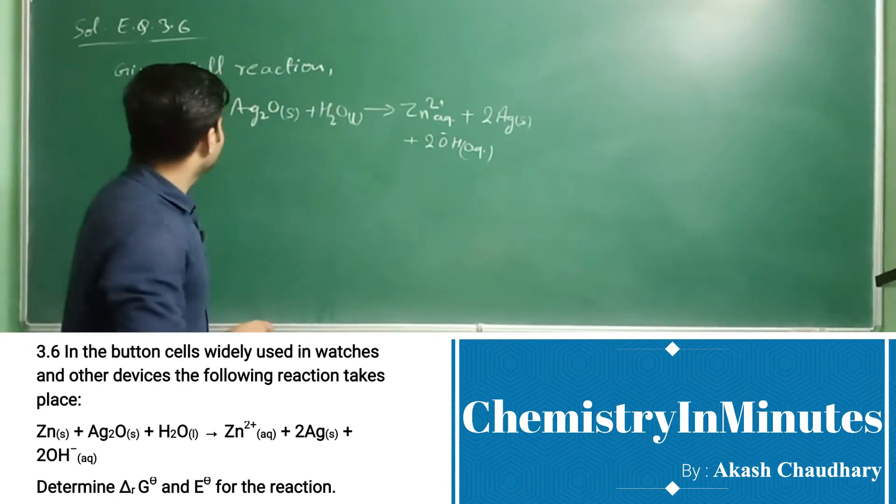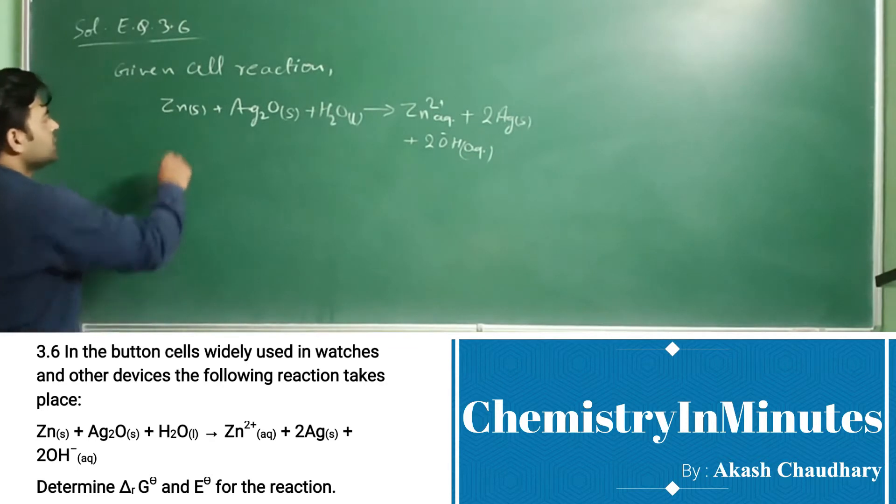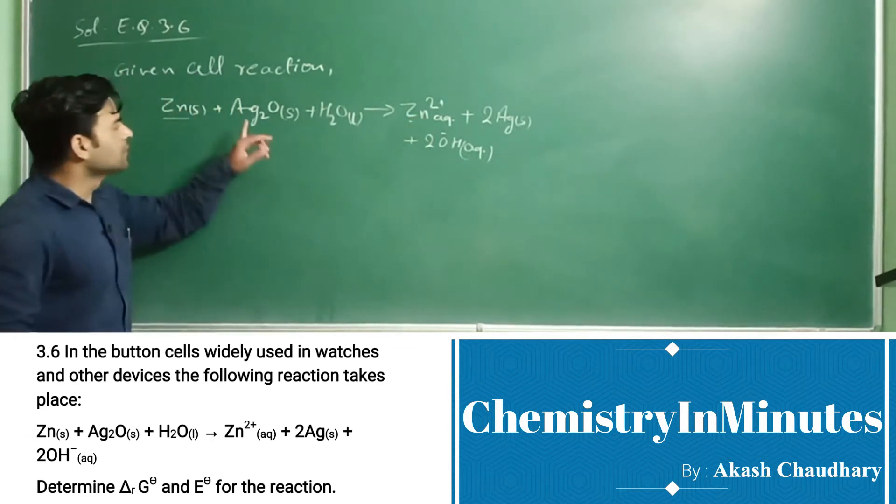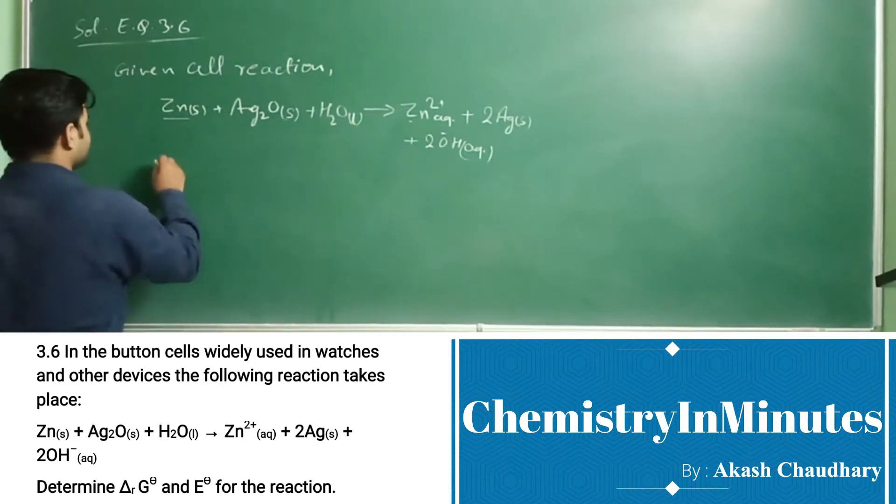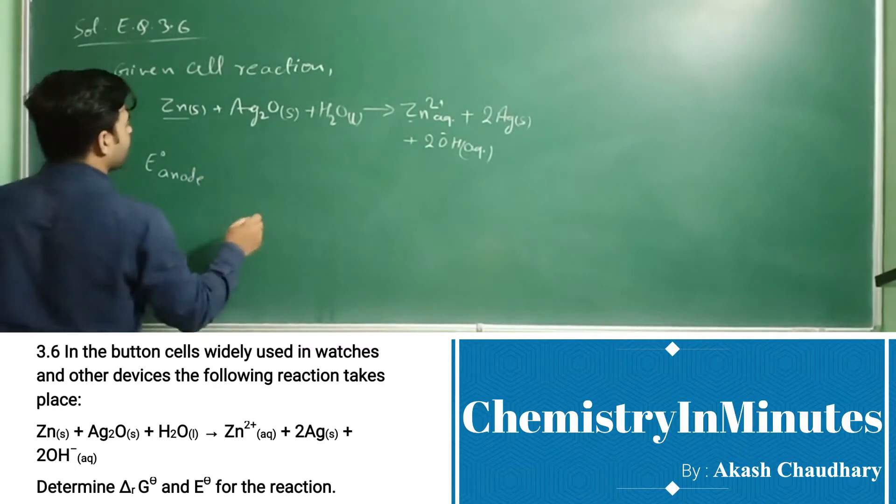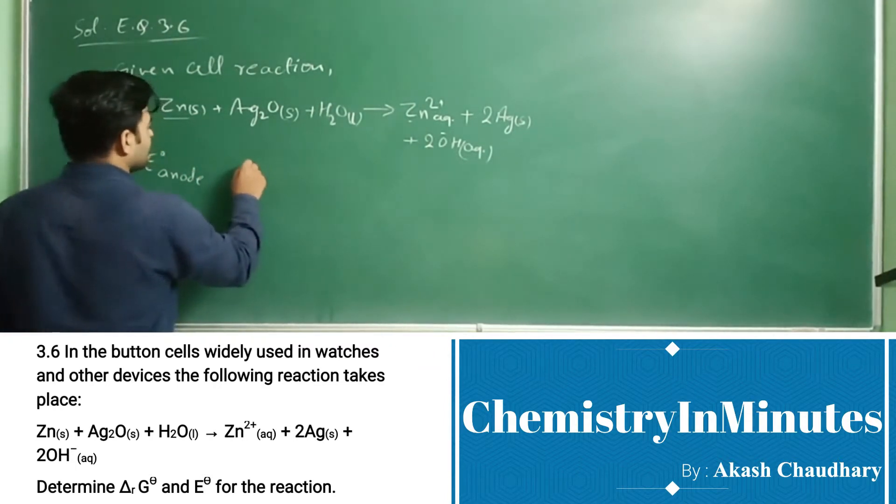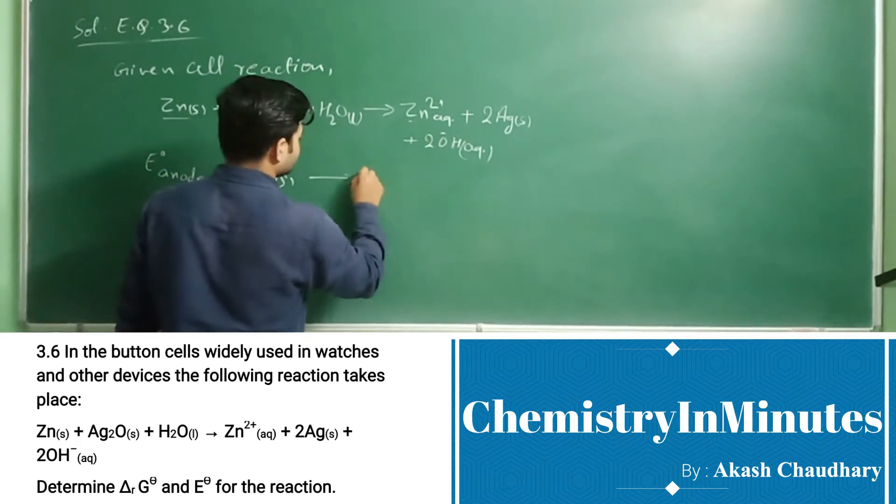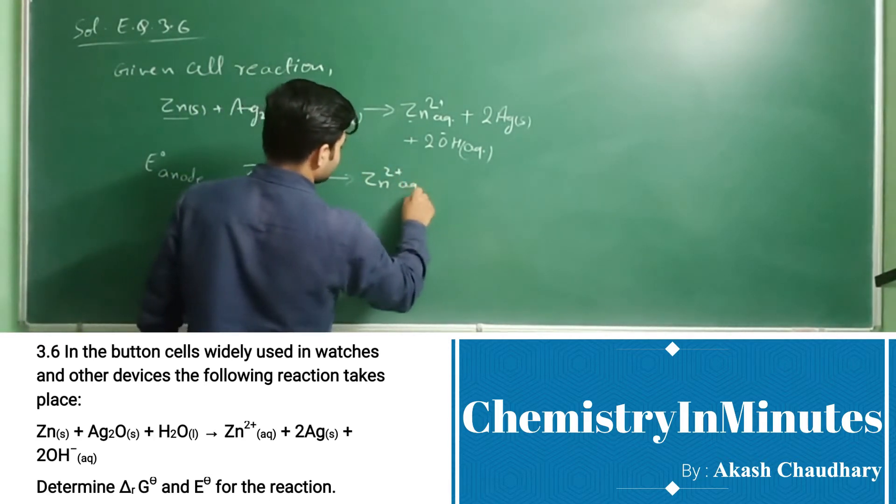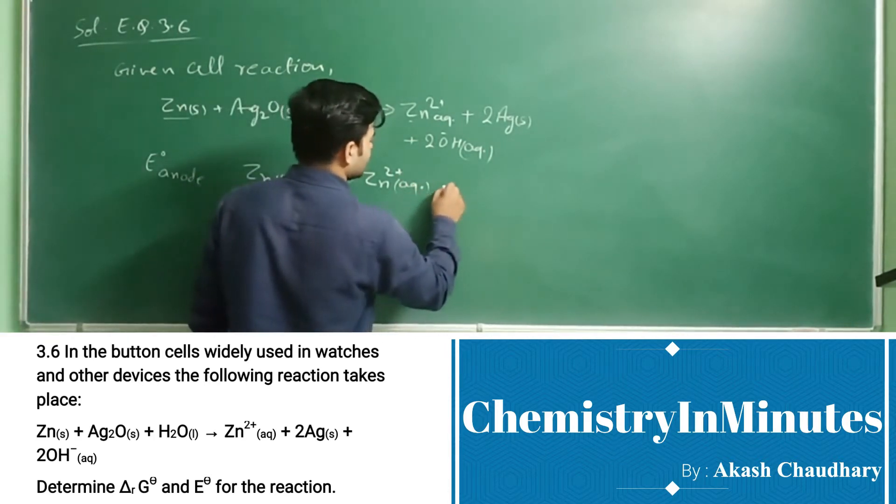Now, the E0 values. Here Zinc is acting as anode and Ag2O is acting as cathode. E0 anode - the reaction is Zinc solid gives Zn2+ aqueous plus 2 electrons.